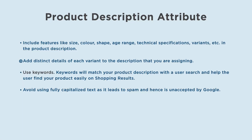Add distinct details of each variant to the description that you are assigning. Use keywords — keywords will match your product description with a user search and help the user find your product easily on shopping results. Avoid using fully capitalized text as it leads to spam and hence is unaccepted by Google.